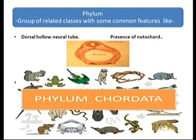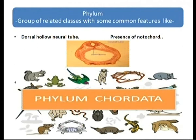The next taxonomical category is phylum (or division in the case of plants). It is a group of related classes with some common features. For example, two important shared characters are: a dorsal hollow neural tube and the presence of a notochord. All organisms possessing these two characters are placed in the phylum Chordata.